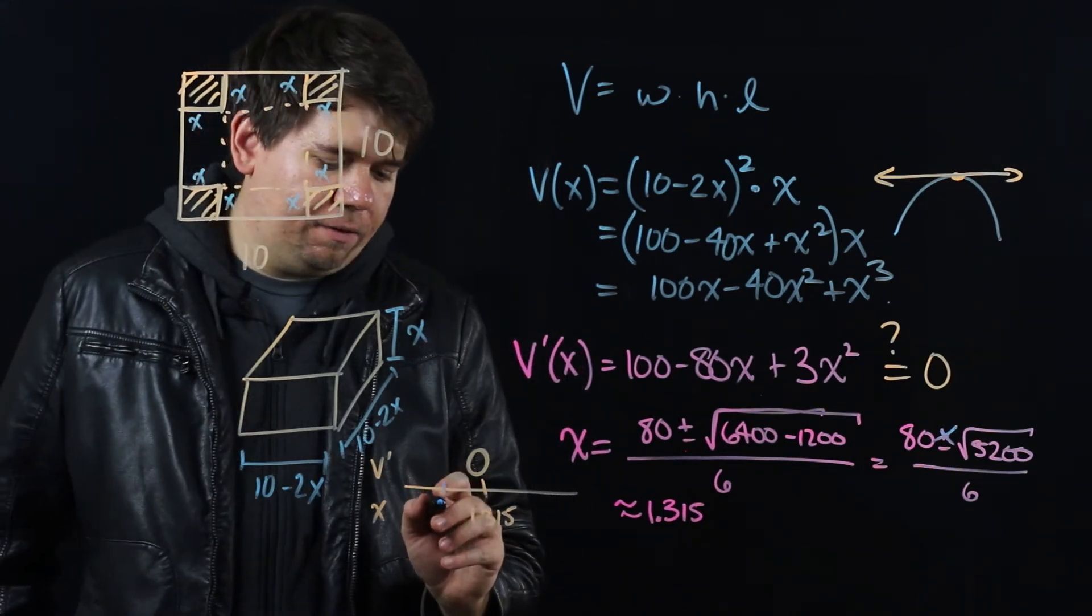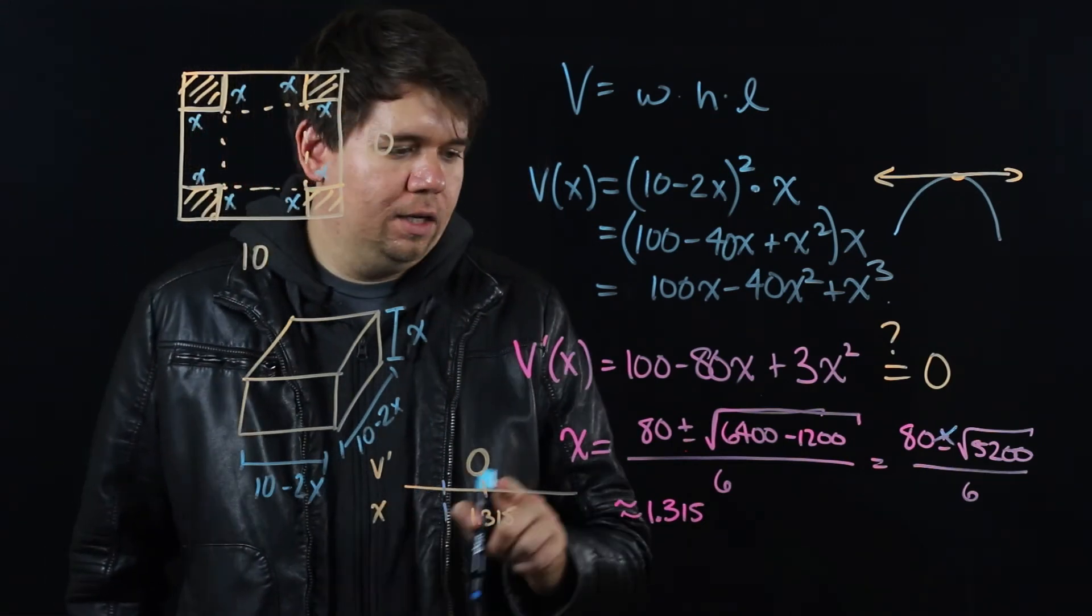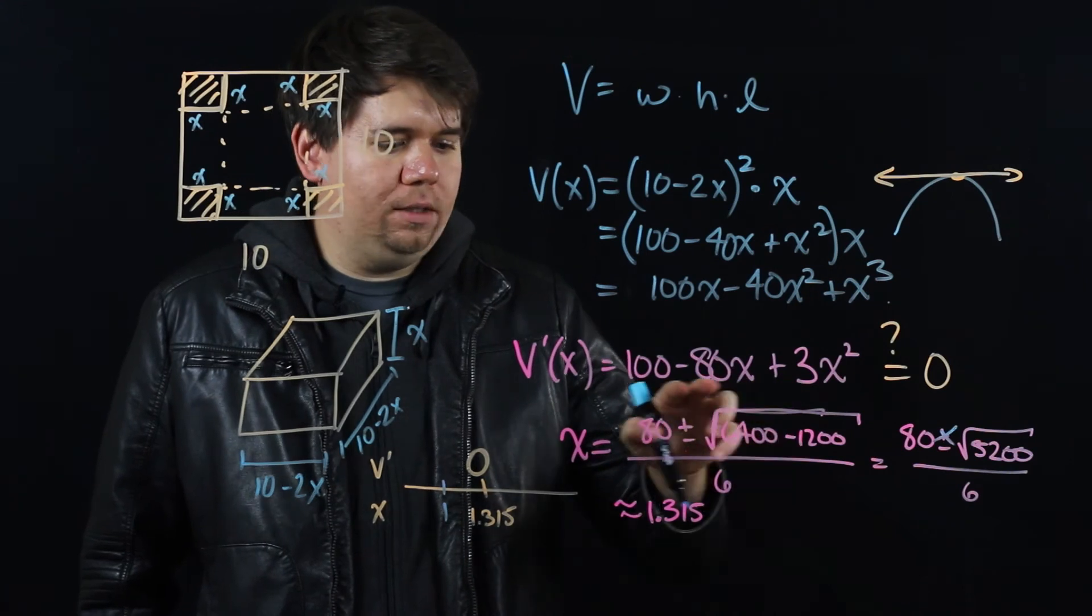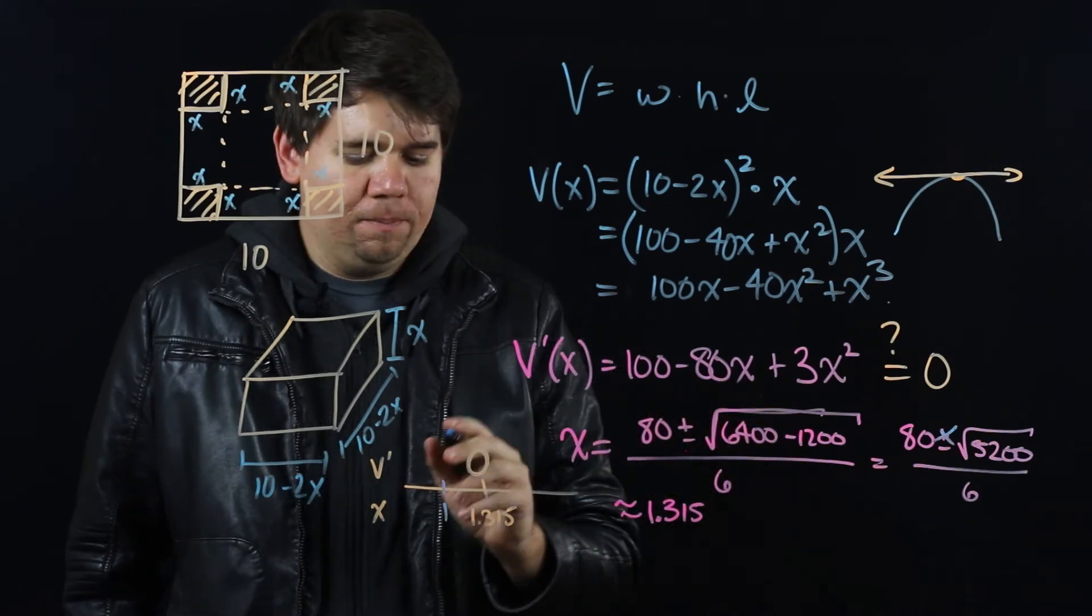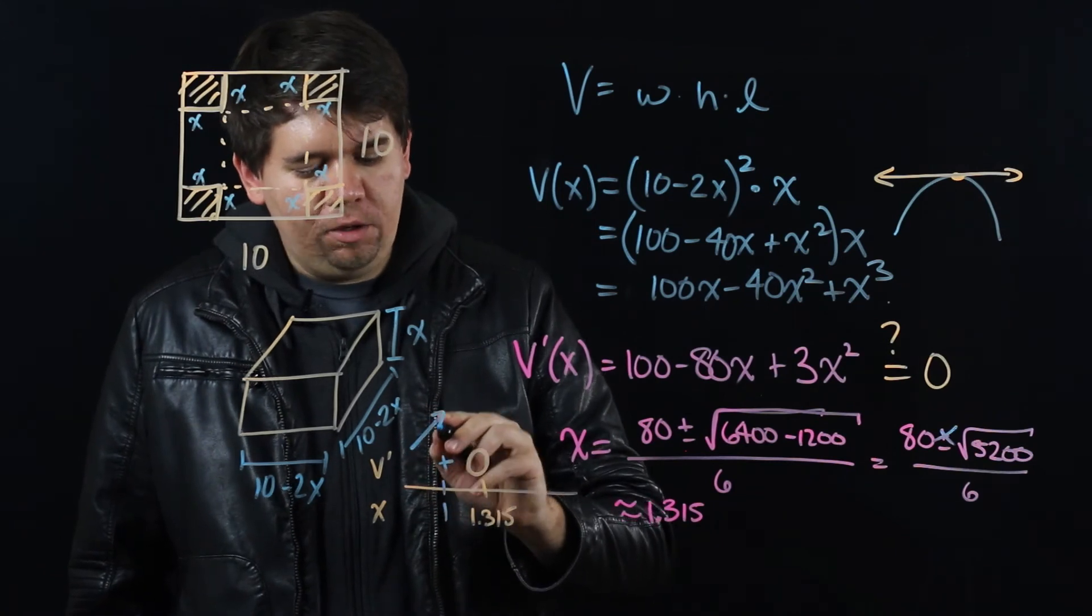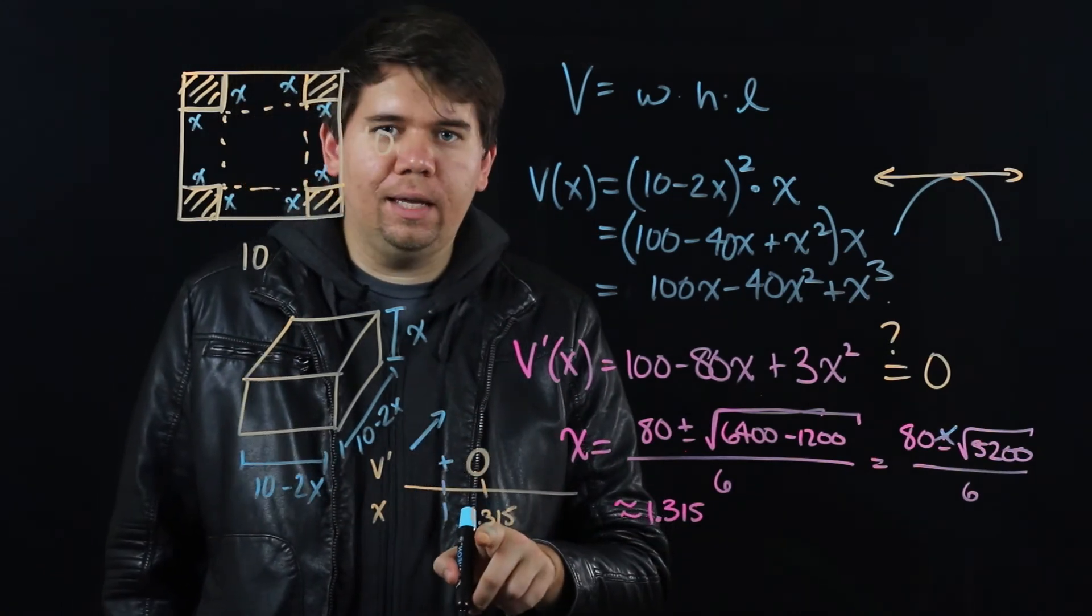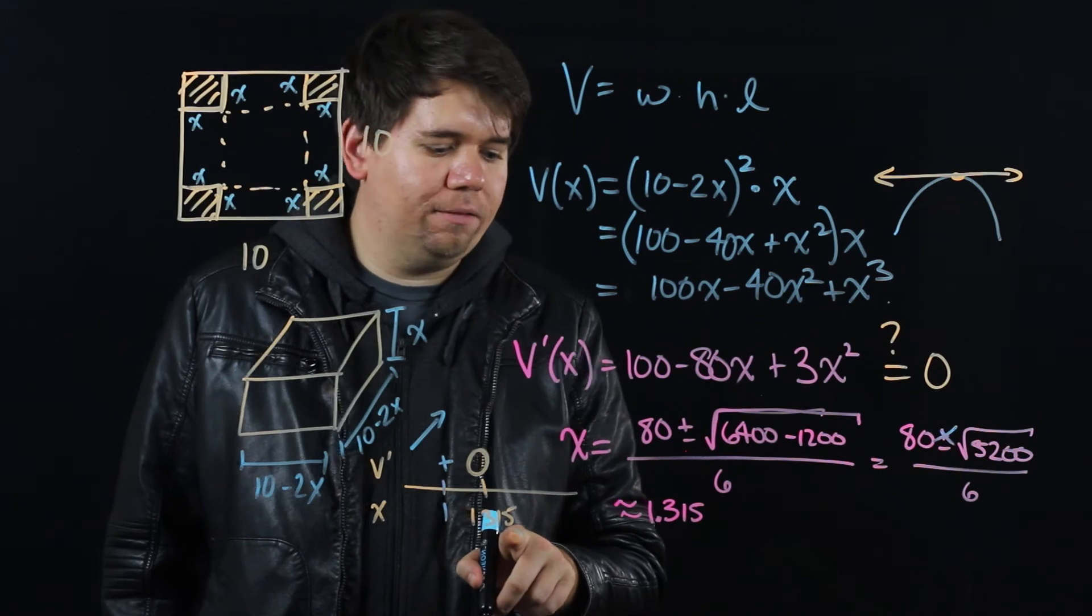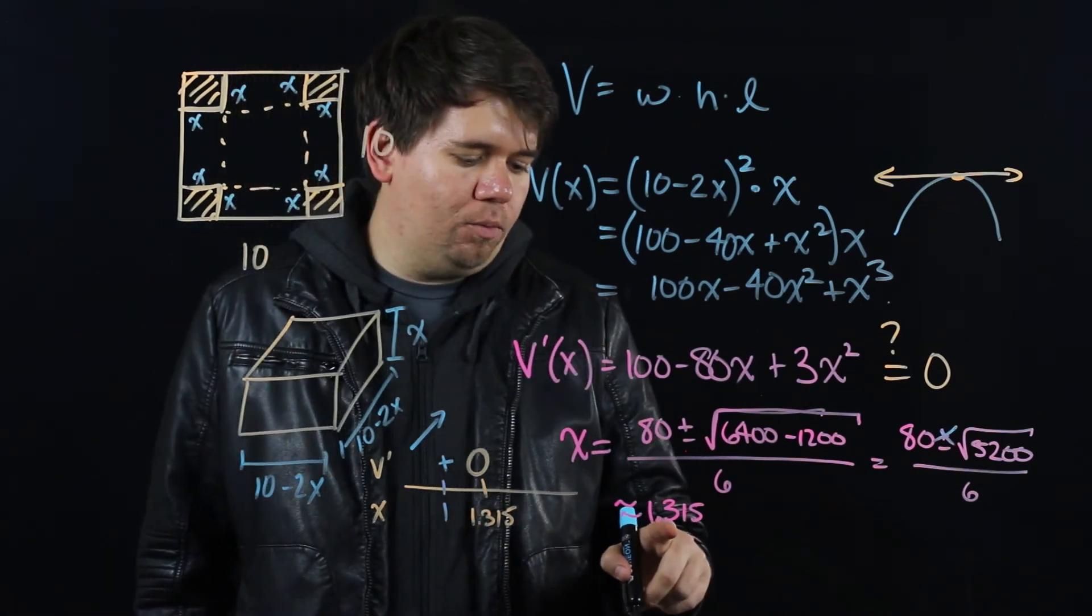Here I have my x value of 1.315, which causes my derivative to be 0. If I pick something a little bit smaller than it, like if I pick an x value of 1, notice what happens when you plug 1 into your derivative. You end up with a positive value, which means that your function was increasing before you hit 1.315.